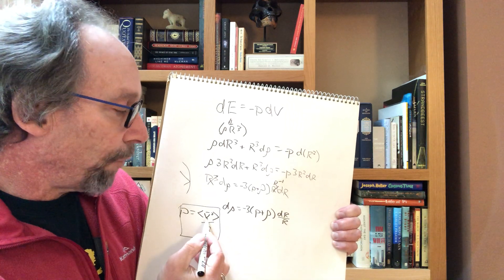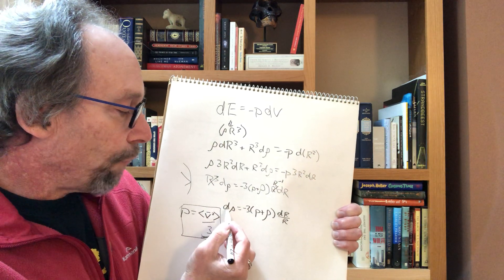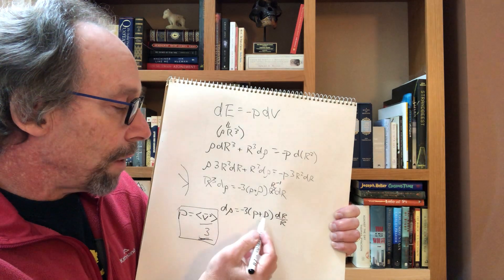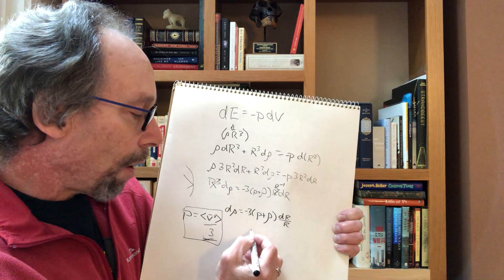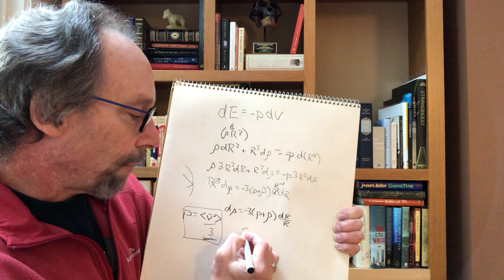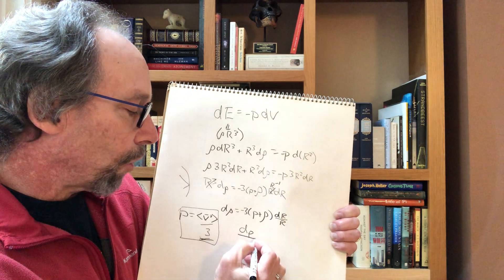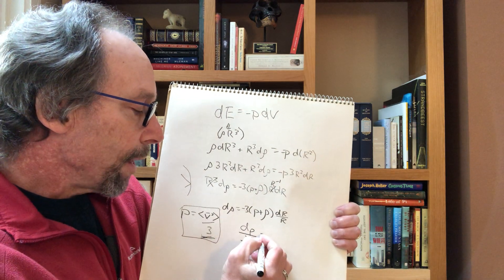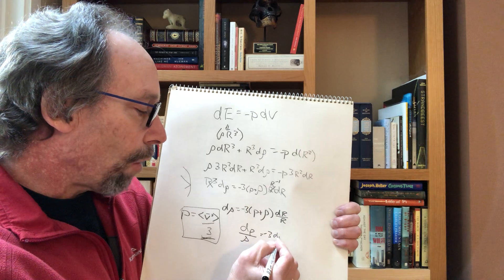But for galaxies where v is zero, p is zero, and therefore d rho is equal to minus 3 rho dr over r, and that becomes a differential equation that you can solve. You can write it as d rho over rho equals minus 3 dr over r.